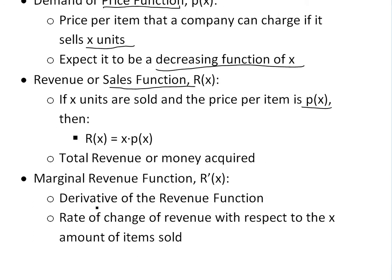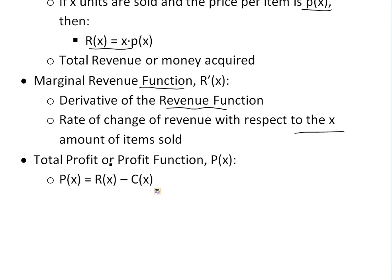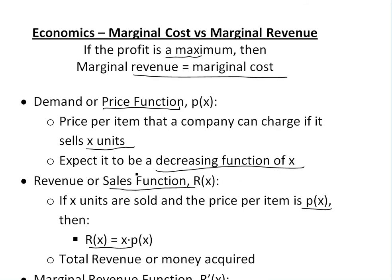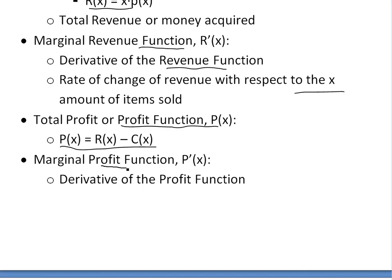Another definition is the marginal revenue function — this is just the rate of change of the revenue function, i.e., its derivative, similar to marginal cost versus the cost function. It's the rate of change with respect to the X amount of items sold. The total profit is basically the revenue minus the cost function — the money we bring in minus the cost of producing X items. The marginal profit function is just the derivative of the profit function, similar to all the marginal definitions. Whenever there's a marginal, it just means derivative.